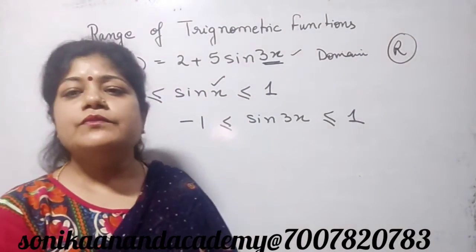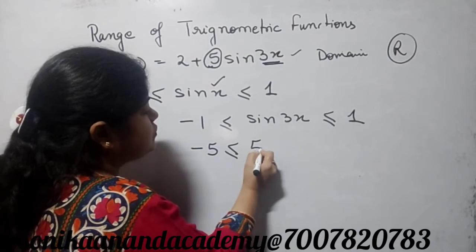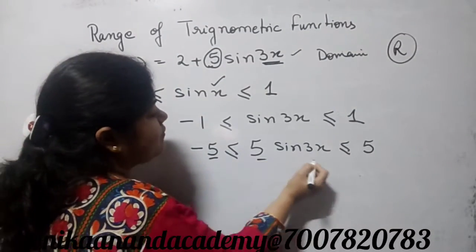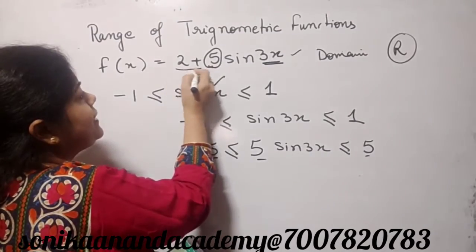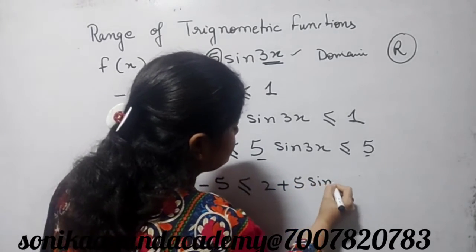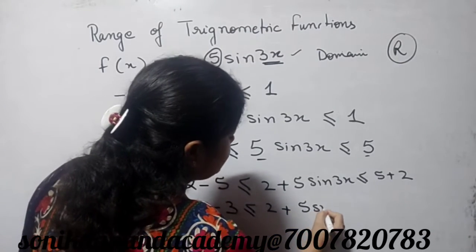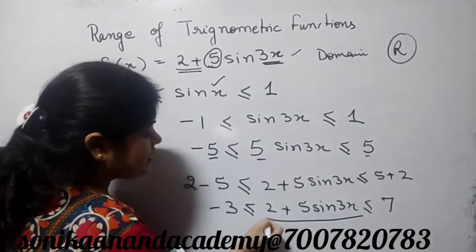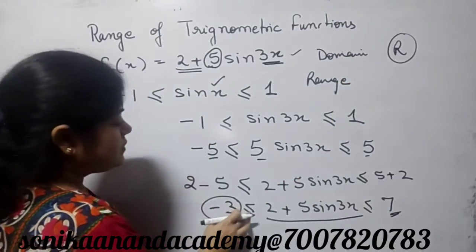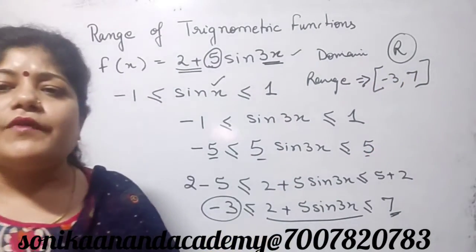Since sin x lies between minus 1 and 1, we multiply 5 on all sides. We get minus 5 ≤ 5 sin 3x ≤ 5. Now we add 2 to all sides: 2 minus 5 ≤ 2 plus 5 sin x ≤ 2 plus 5. So the value becomes minus 3 and 7. The range of this function lies from minus 3 to 7, written in square brackets as [−3, 7].